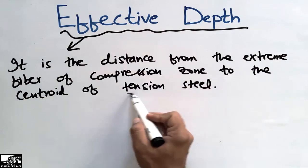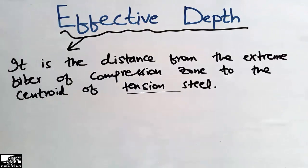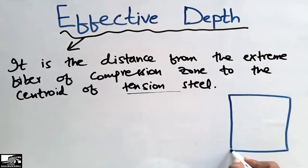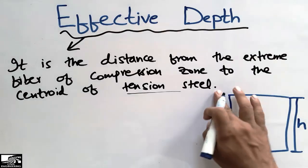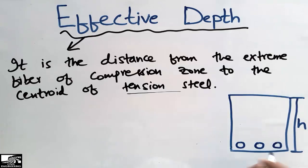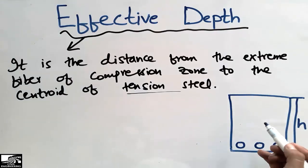To illustrate what this means, let's take an example of a beam section. This beam has a total depth represented by H. We design this beam and place reinforcement — three bars used at the bottom for tensile stresses. The total depth is represented by H.